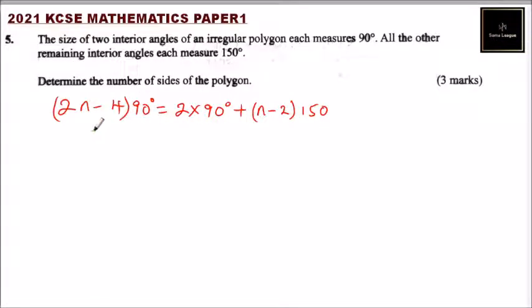So we open the bracket: this will be 180n - 360° equals 180° plus we open the bracket, this will give us 150n - 300°. So we put the like terms together.